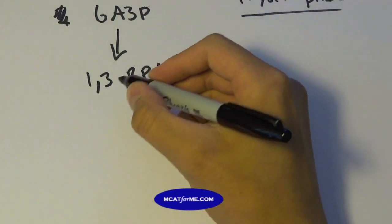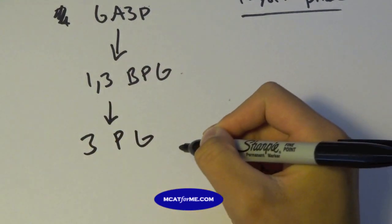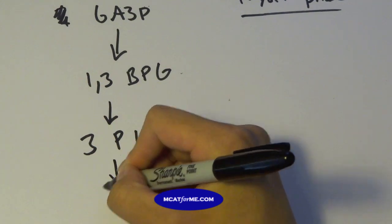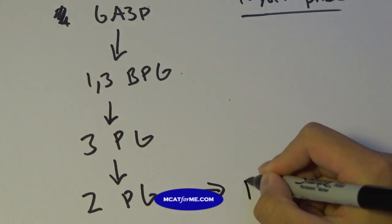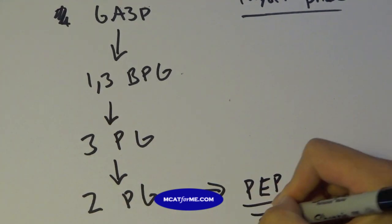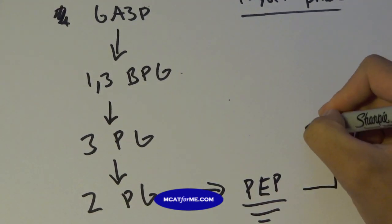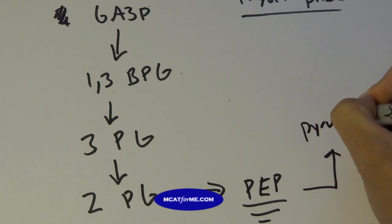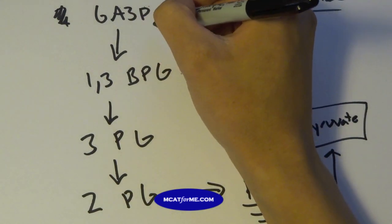So GA3P goes to 1,3BPG, from there we convert it into 3PG, which is phosphoglycerate, 2PG, and then we're going to go into something called PEP. This is a very important thing to remember, and I'll actually draw it out because I think it's very important, and pyruvate as well. So your end product is pyruvate, and I'll just add in the intermediates of what we added in.